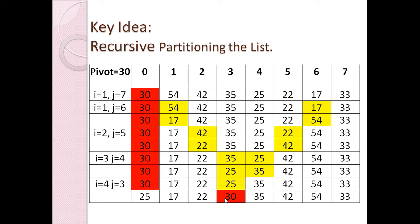By doing this exercise, our list of eight elements is now divided into two sublists — a left sublist and a right sublist. The pivot element sits in its final position. All elements in the left sublist are smaller than the pivot element, and all elements in the right sublist are greater than the pivot element. This process is called partitioning.